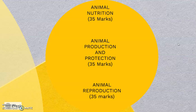Coming to reproduction — this is quite easy, 35 marks. I always say that if you can understand the reproductive system in human beings, it shouldn't be difficult to understand the reproduction system in animals. You need to know the reproductive organs and system for both male and female animals, the primary and secondary organs, and their structures and functions.